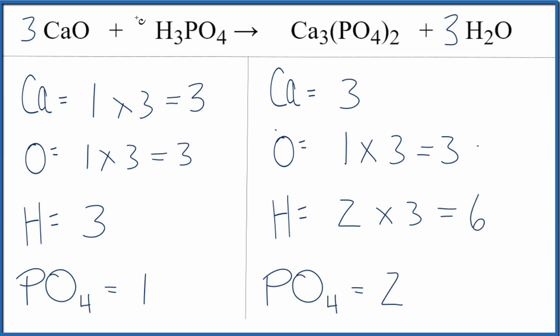Let's do the hydrogen. We put a two in front of the H3PO4. Three times two gives us six. Those are fixed. And this two applies to everything, so I have two of these PO4s, two phosphate ions. So one of these times two gives us two.